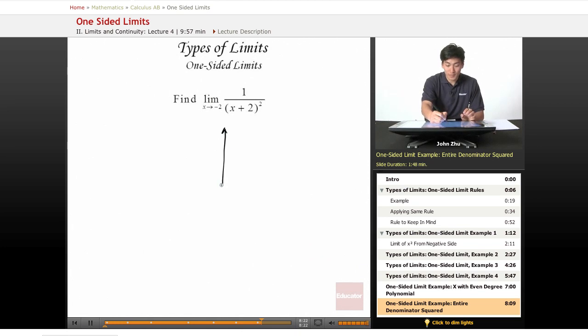If we graph this, we see that there is an asymptote at negative 2, and the graph has the following characteristic. And there are asymptotes at y equals 0 as well.